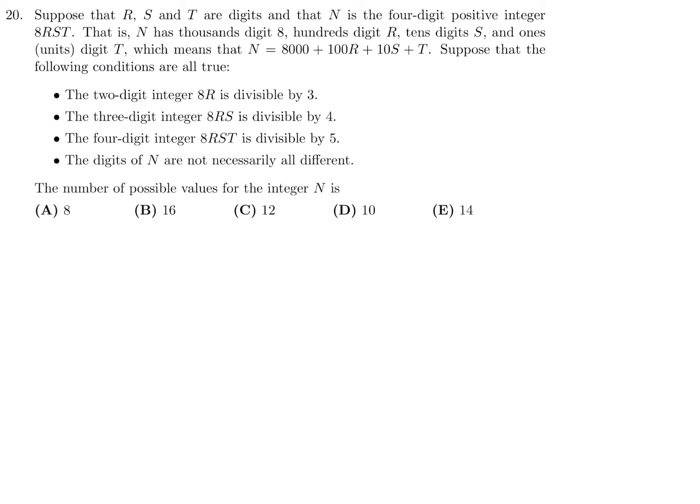Suppose that R, S, T are digits and that N is a four-digit positive integer 8RST. And that N has a thousands digit 8, hundreds digit R, tens digit S, and units digit T, which means that N equals 8000 plus 100R plus 10S plus T. Suppose that the following conditions are true. The two-digit integer 8R is divisible by 3. Let's take this one step at a time. 8R is divisible by 3. A two-digit number that starts with 8 and is divisible by 3. So the only choices are 81, 84, and 87. These are the only three that are divisible by the number 3.